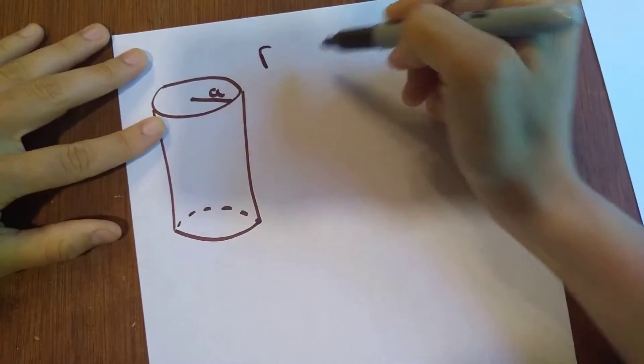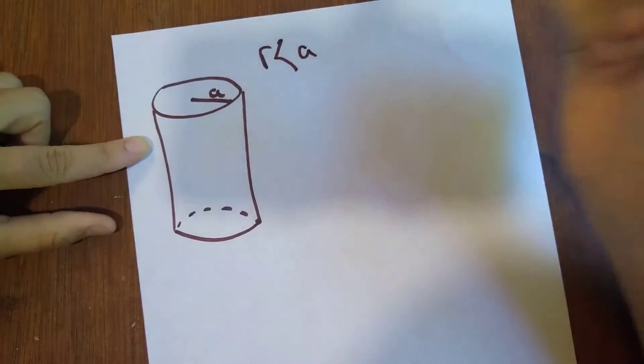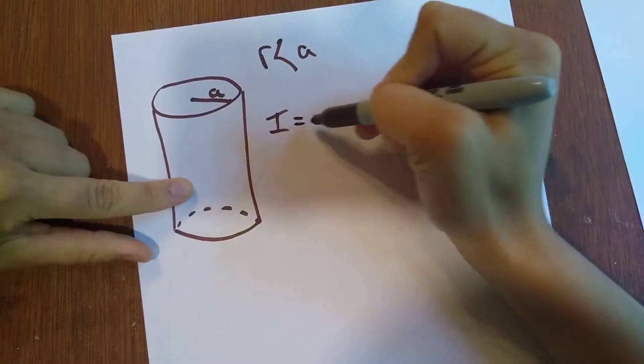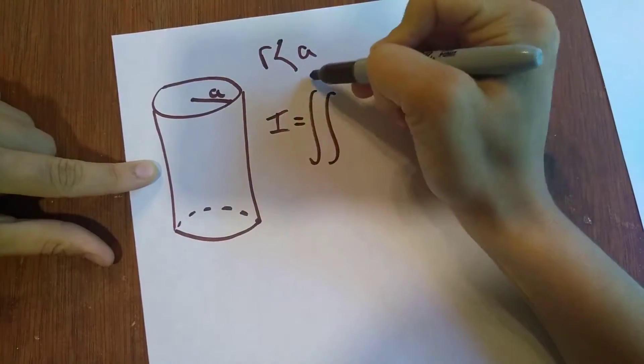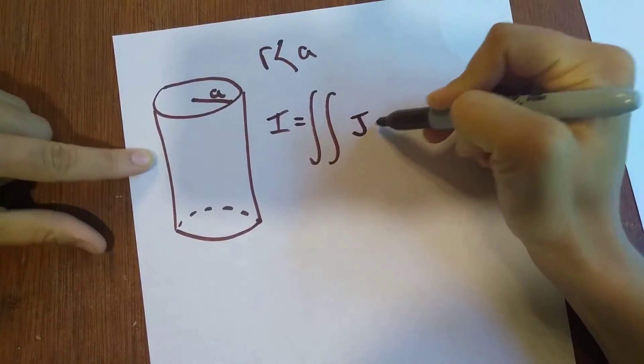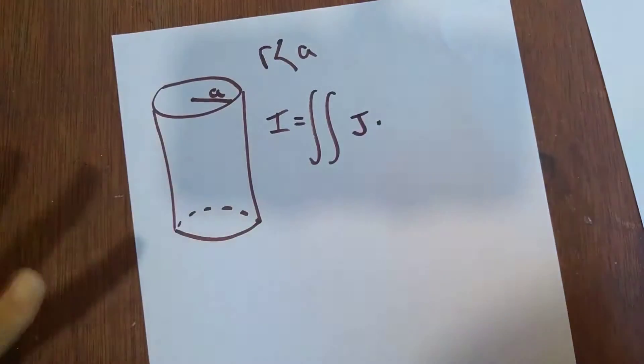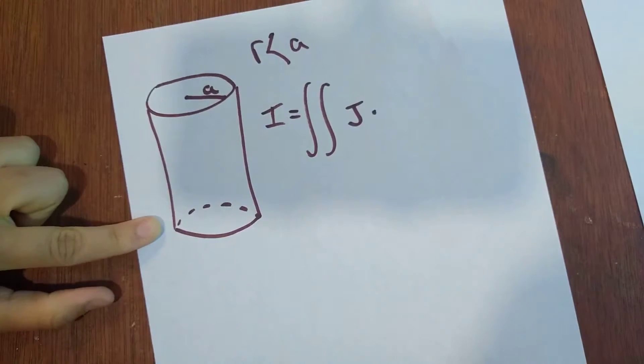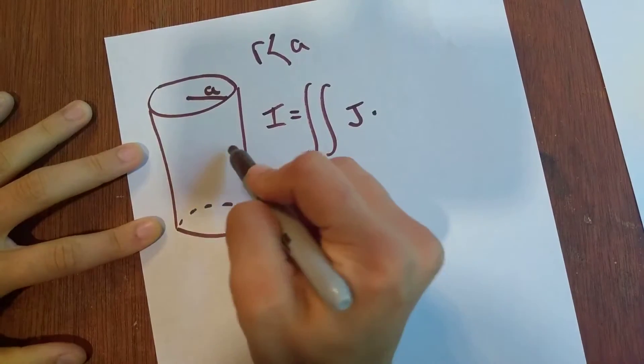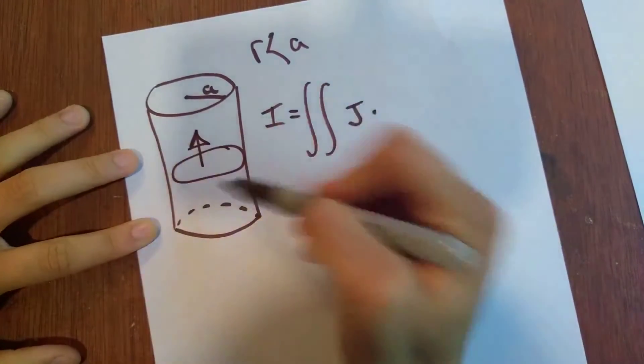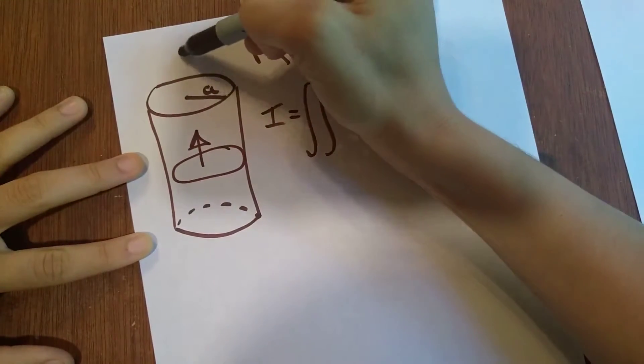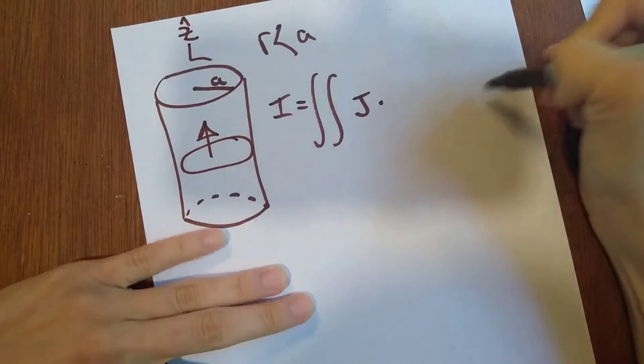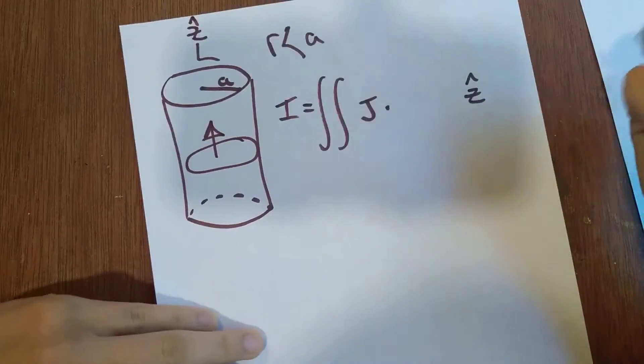So for R is less than A, I is going to equal J dot DS. But wait, what is our DS? First of all, let's find the unit vector. Which direction is the current going in this cylinder? The direction of the current is going through the cylinder. So that's going to be our DS. So let's say this is the Z direction going up. Okay, so that's part of our DS.